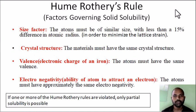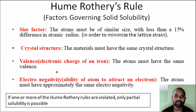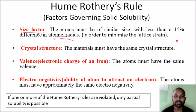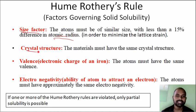The Hume-Rothery rule is named after the scientist Hume-Rothery. These are the factors governing solid solubility, also called rules of solid solubility. There are four types of rules. First, the size factor: when adding a base metal and an alloying element, the two atomic radii must have less than 15% difference. Atoms must be similar in size. Next is crystal structure: the base material and the alloying element must have the same crystal structure for a solid solution to form. The crystal structure will be the same.